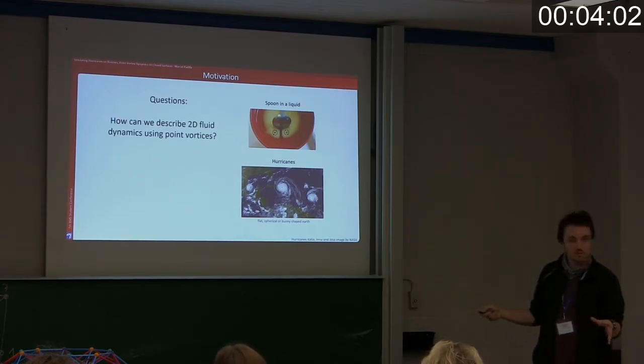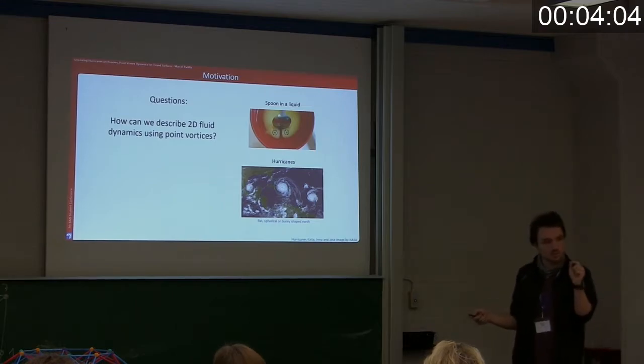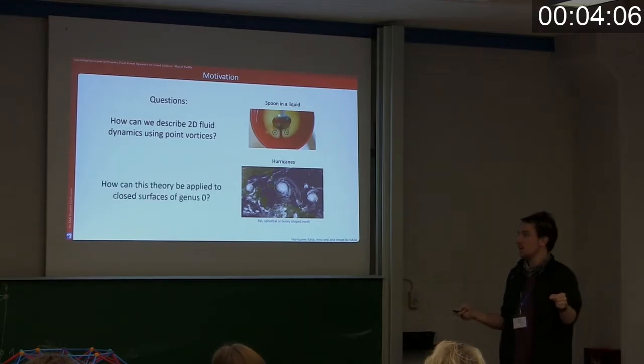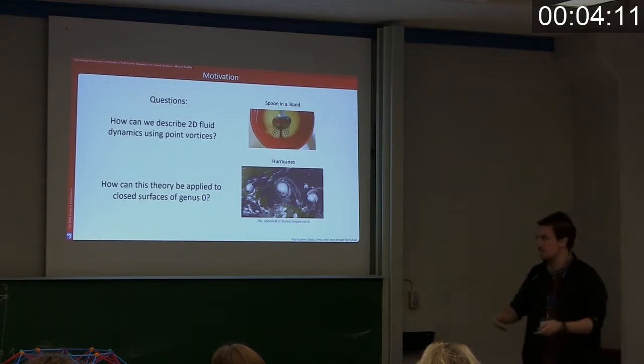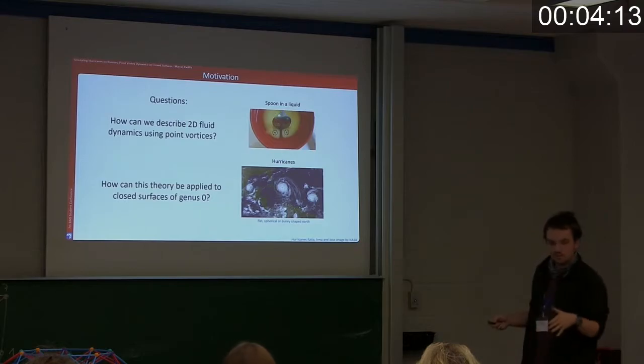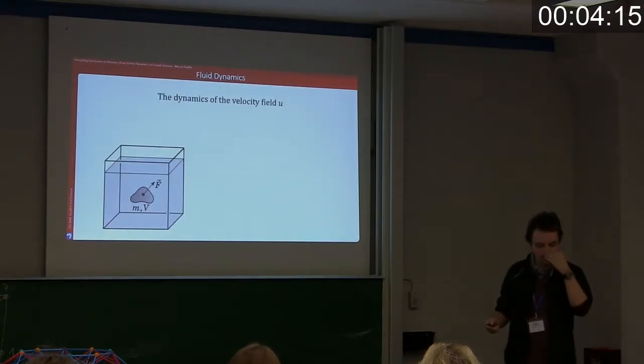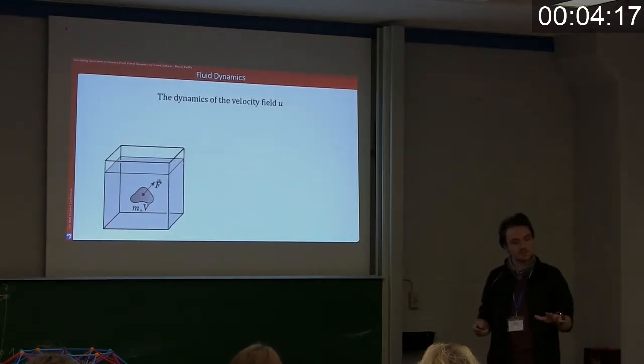This is exactly what I will try to answer in this talk. How can we describe 2D fluid dynamics using only point vortices? And how can we generalize this to closed surfaces of genus zero, for example the bunny? So first off, we are going to start out with very basic fluid dynamics.